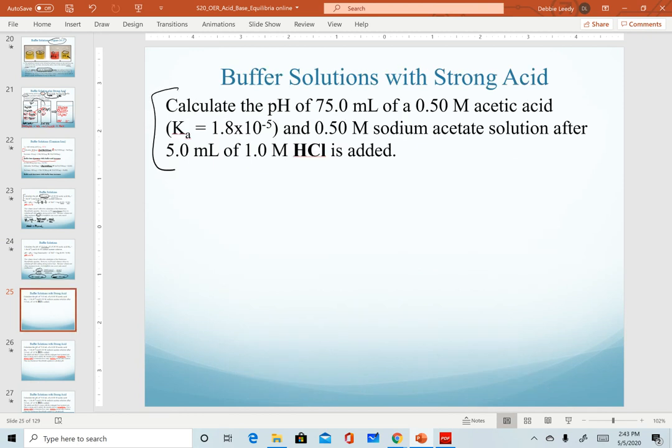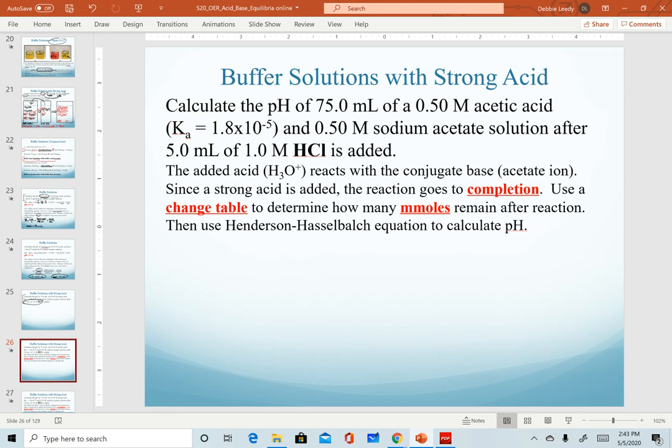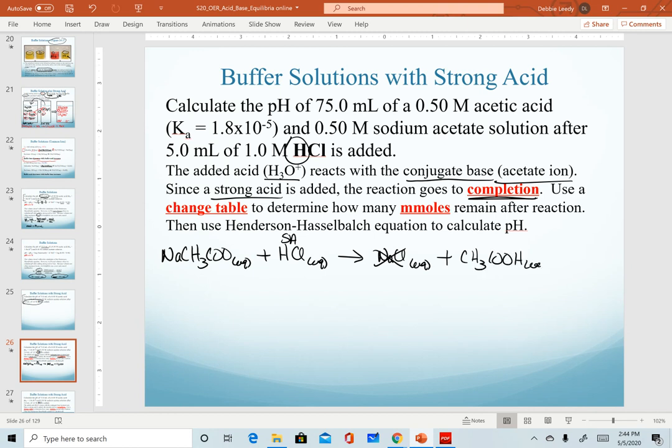So our acid problem that we're going to work is here. We're going to add some HCl. As we already figured out from our drawing, we know that the H3O+, or just the H+, in the HCl reacts with the conjugate base, the acetate ion. Since we're adding a strong acid, we know that this reaction goes to completion. And so again, for our molecular equation, it's the sodium acetate reacting with the HCl. Since my HCl is a strong acid, it forces our reaction to completion to make some neutral sodium chloride. Since this is a neutral salt, it's not going to affect my pH, but I will make more of my acetic acid solution.